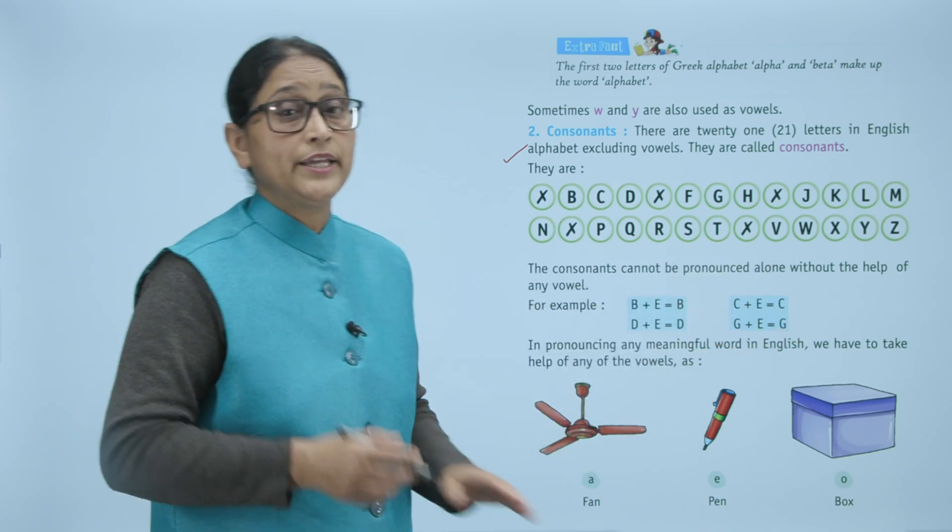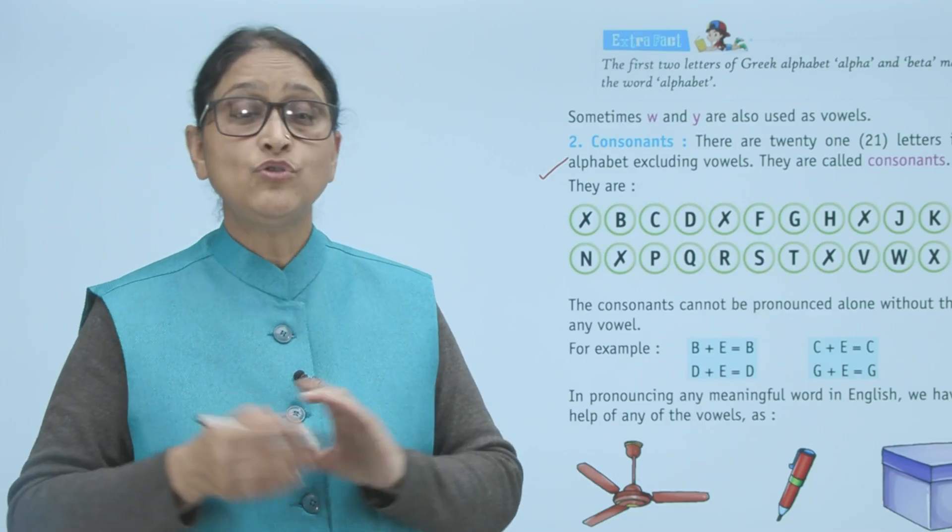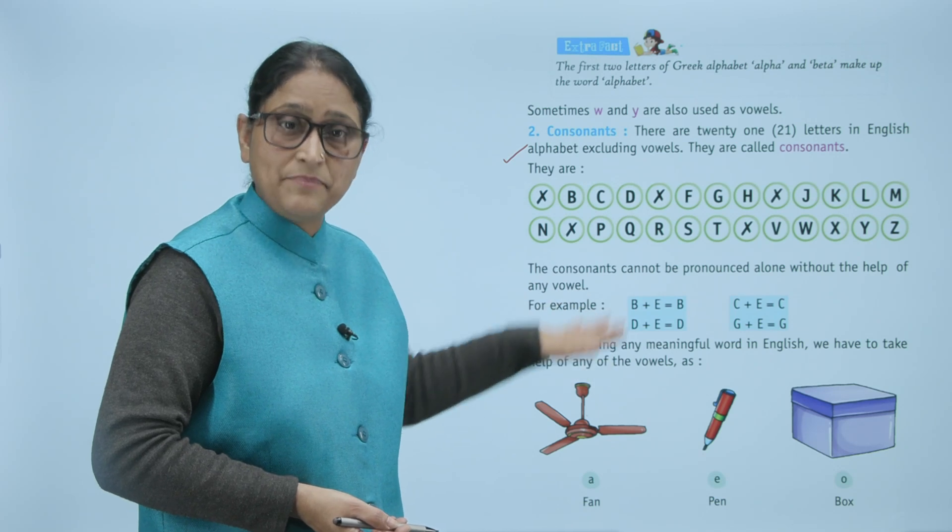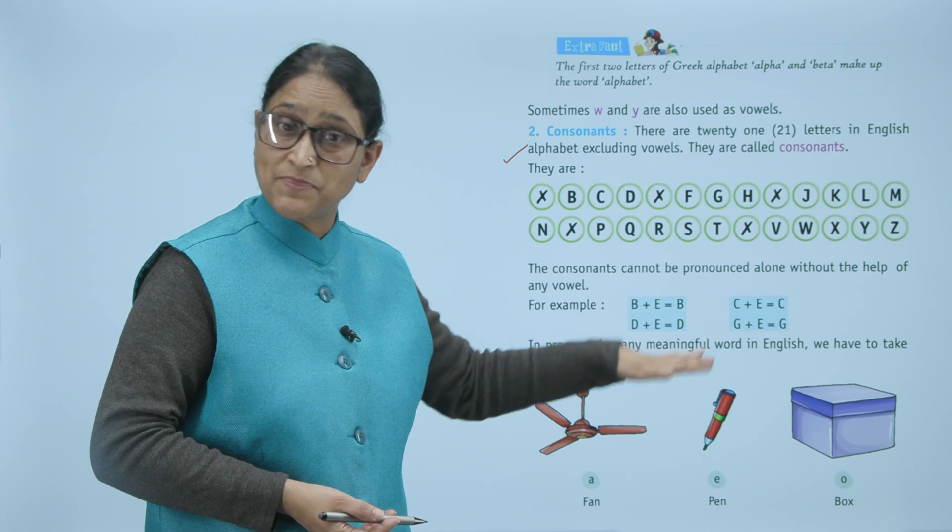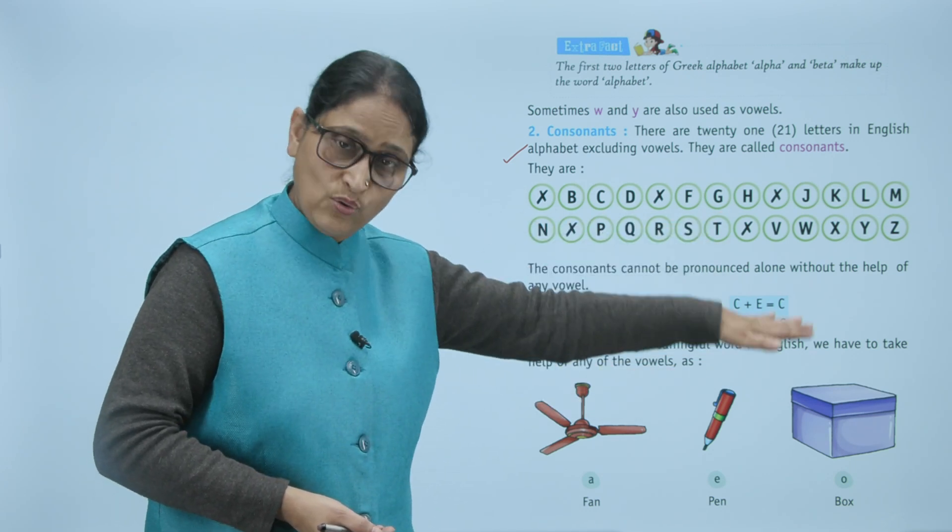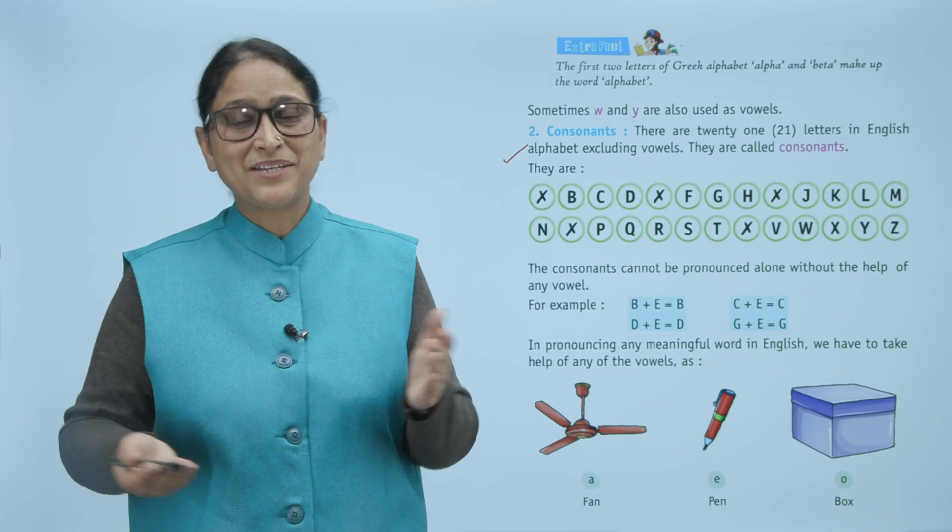In pronouncing any meaningful word in English, we have to take help of any of the vowels, as in: F-A-N (fan), P-E-N (pen), B-O-X (box). We have to take help of vowels A, E, and O. I hope it is clear to you. Now it's time to revise.